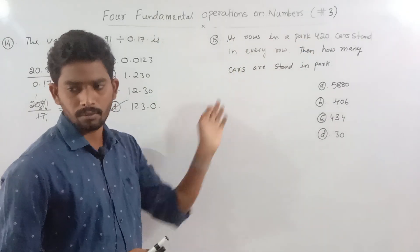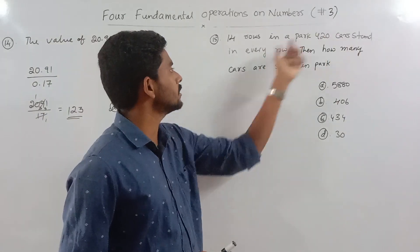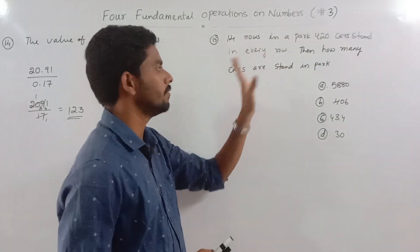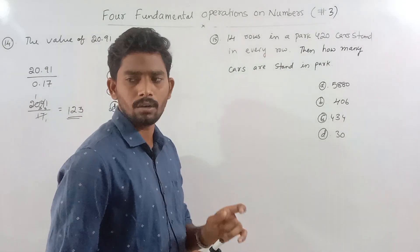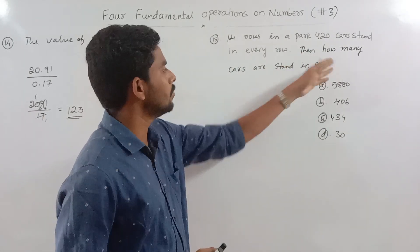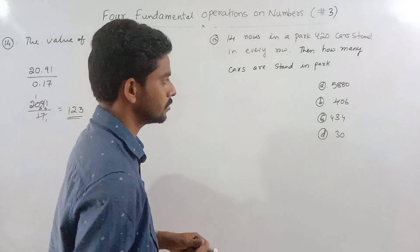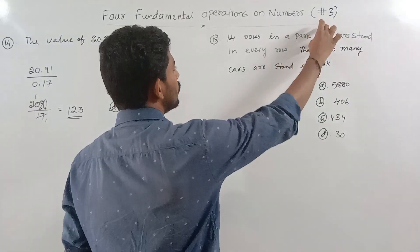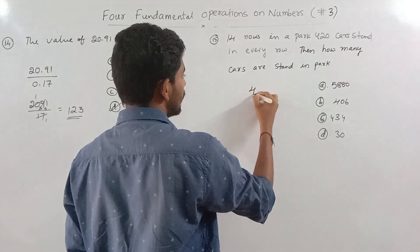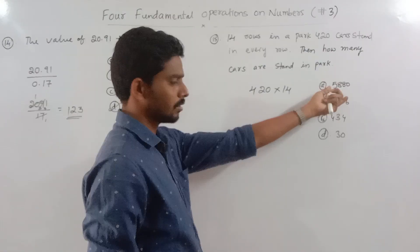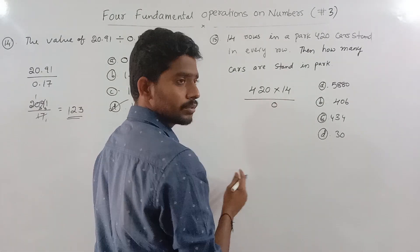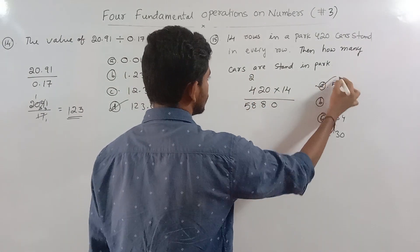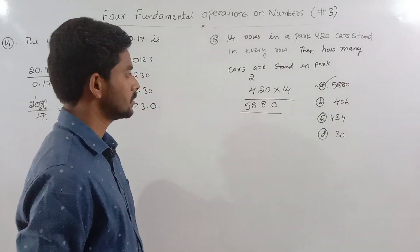Next problem: there are 14 rows in a park, and 420 cars are standing in every row. To find the total number of cars, we multiply: 14 × 420. Working it out: 14 × 2 = 28, 14 × 4 = 56, giving us 5,880. So 5,880 cars are standing in the park.